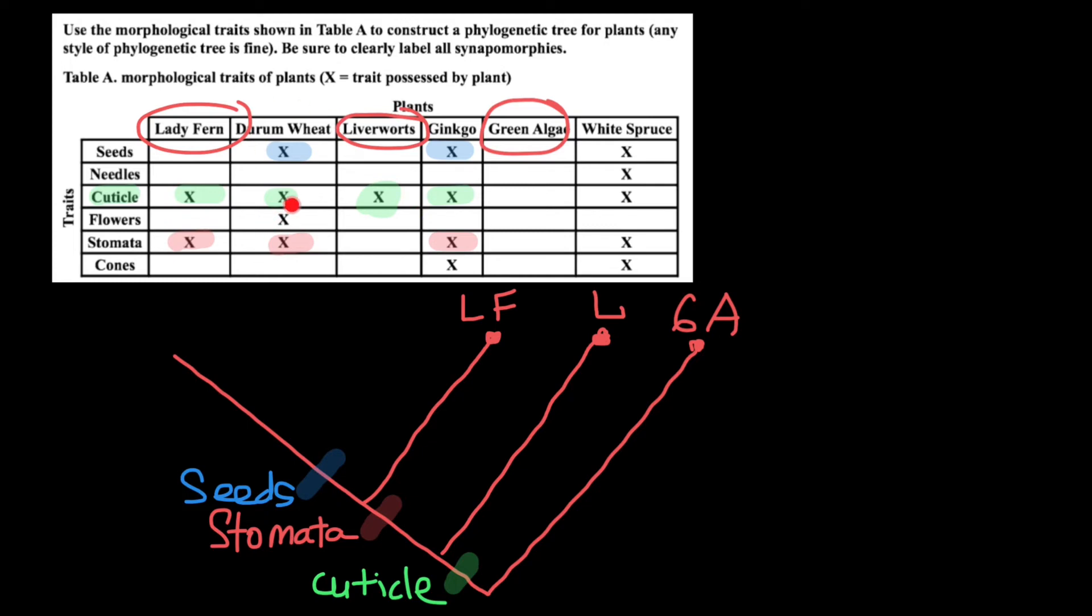Durum wheat has flowers. But ginkgo doesn't have flowers. Ginkgo has cones. But durum wheat doesn't have cones. So now our phylogenetic tree would look as follows. So let's add another branch here. And it's going to stand for the ginkgo. Let's put G on top. We also know that ginkgo has cones, which durum wheat doesn't have. So we put cones here. Let's add the name of the trait cones. So cones.